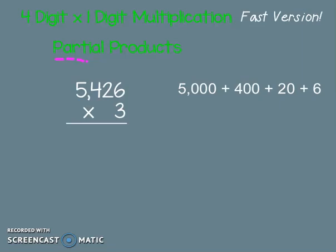In this video I'm going to show you how to do partial products for 4-digit by 1-digit multiplication. This is the fast version for those of you who just want a refresher. You remember what it all means, but this is just a reminder of how to do it quickly. If you want a more detailed step-by-step explaining what everything means, check out one of my other videos.